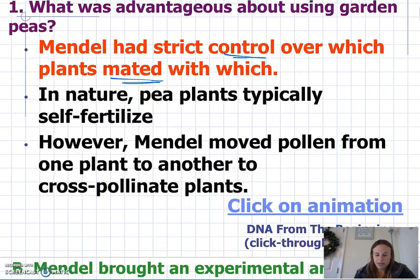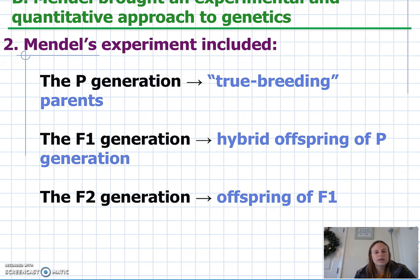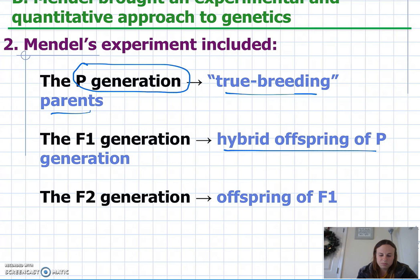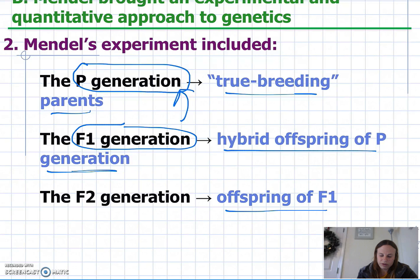So what did his experiment include? It included what he called the true-breeding parents, also known as the P generation, or the parents' generation. Then you have the hybrid offspring of the P generation — the F1 generation, which are the offspring of the parents. The F2 generation is then the offspring of the F1 generation.